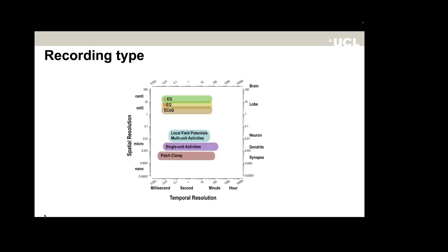Zooming in on electrophysiological recordings alone, we can see differences in spatial resolution even between EEG, MEG, and ECoG. They are very comparable in temporal resolution, but differ in spatial resolution from centimeter to millimeter scale. As a whole different category, we have single-unit and multi-unit activities.